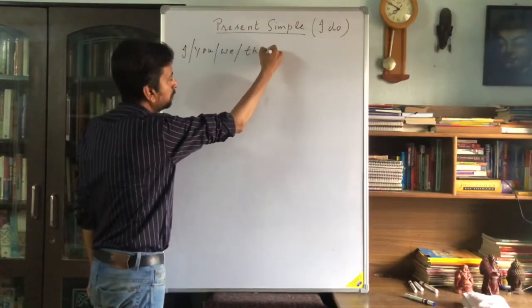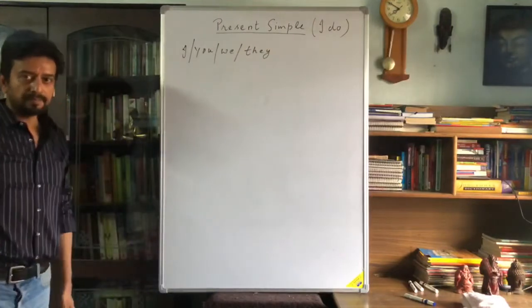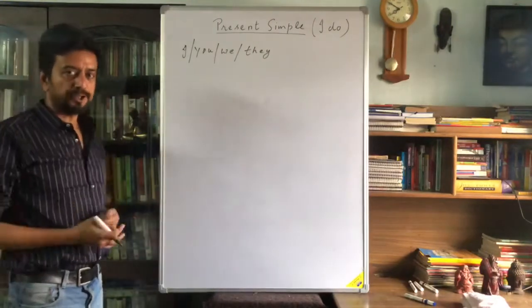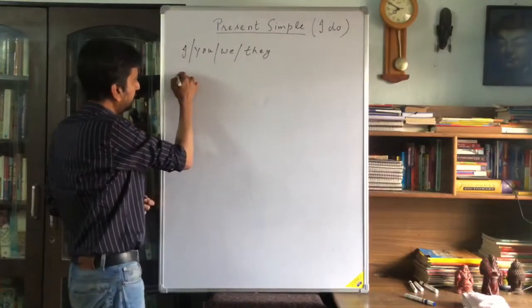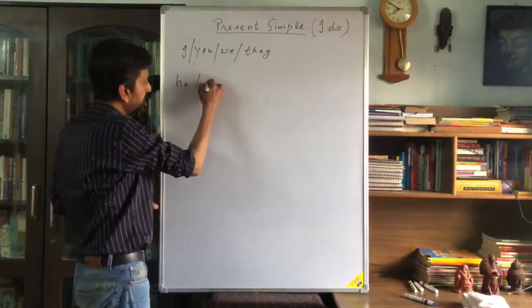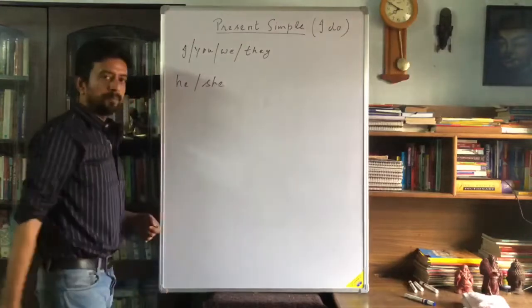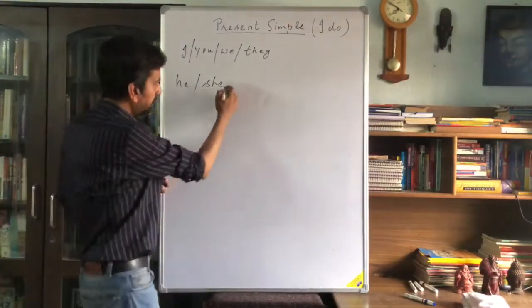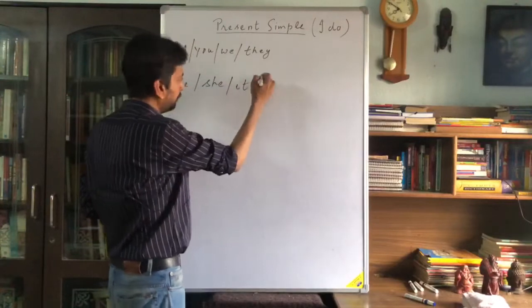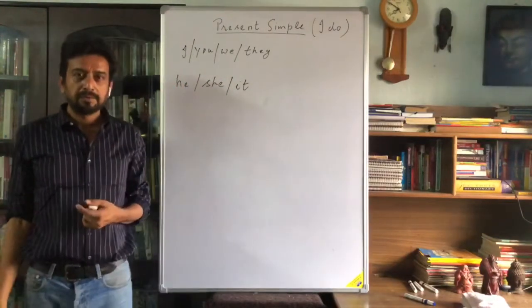The second category of the subject is the subject like he, the subject like she, the subject like it.